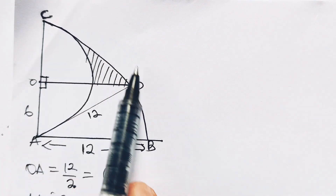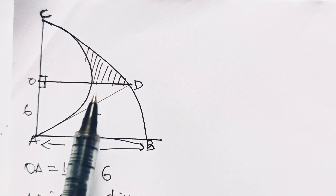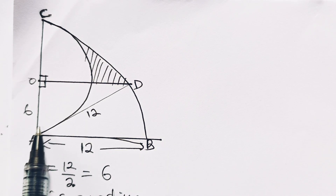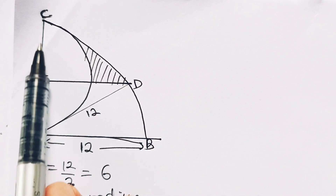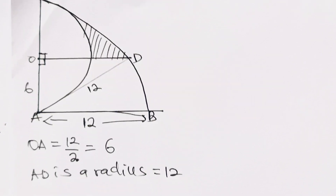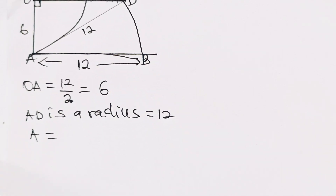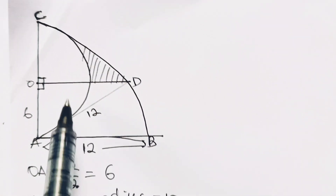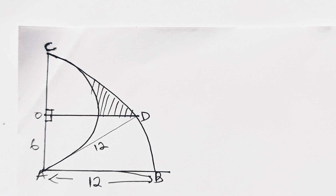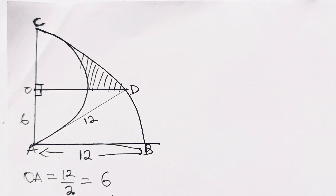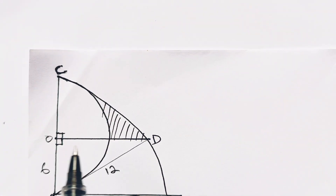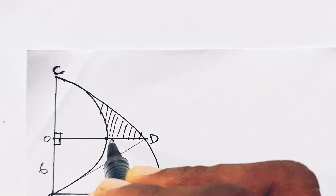ACD is a sector of this circle, so the shaded portion equals the area of sector ACD, minus the area of triangle AOD, minus the area of this quadrant — let's call the meeting point P — so minus the area of quadrant OPC.